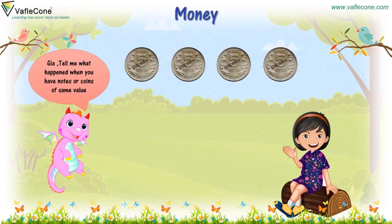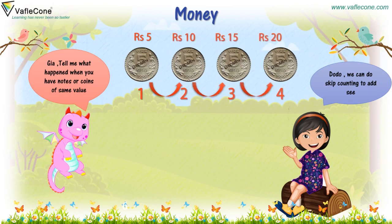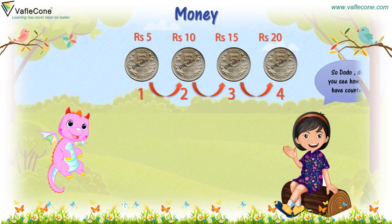Jia, tell me — what happens when you have notes or coins of the same value? Dodo, we can do skip counting to add. See — rupees 5, rupees 10, rupees 15, rupees 20. Dodo, did you see how we counted? Yes, now I have understood.